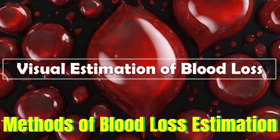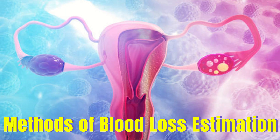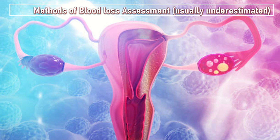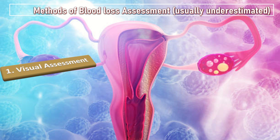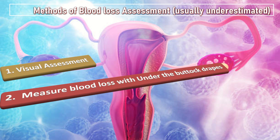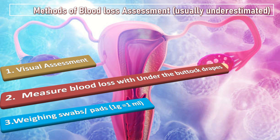Visual estimation of blood loss is the topic of our discussion today. We need to understand the different methods of blood loss assessment, which are usually underestimated. Along with visual estimation, other methods include measurement of blood loss with under-the-buttock drapes, weighing of the swabs and pads — one gram of the swab and pad equals one ml of blood loss.